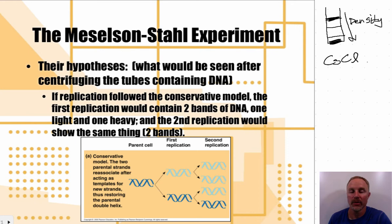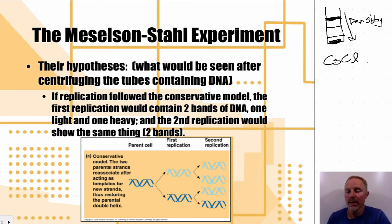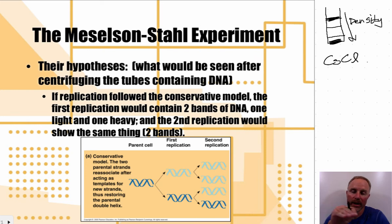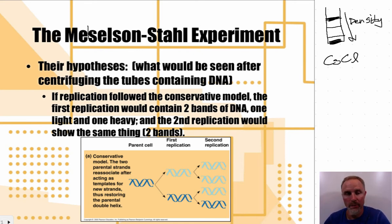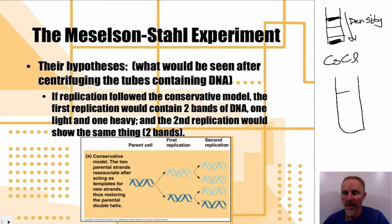Inside the tube they placed cesium chloride, a salt solution. They broke apart the cells and added the DNA to the centrifuge tube containing cesium chloride. After spinning at high speed for a long time, the DNA separated into a band. They measured density differences by shining light through the tube and observing how it was refracted. Since everything else in the tube was cesium chloride at uniform density, the DNA appeared as a thin band at its corresponding density position.